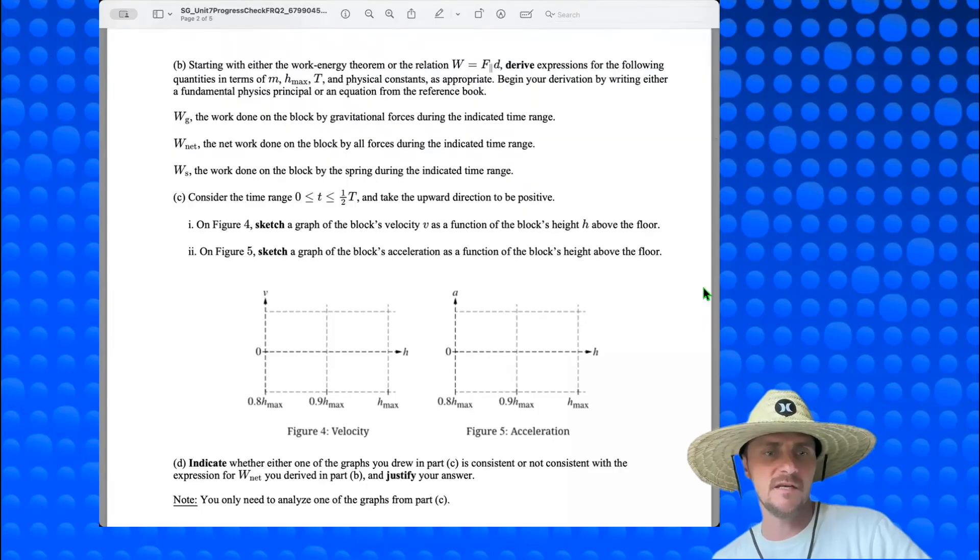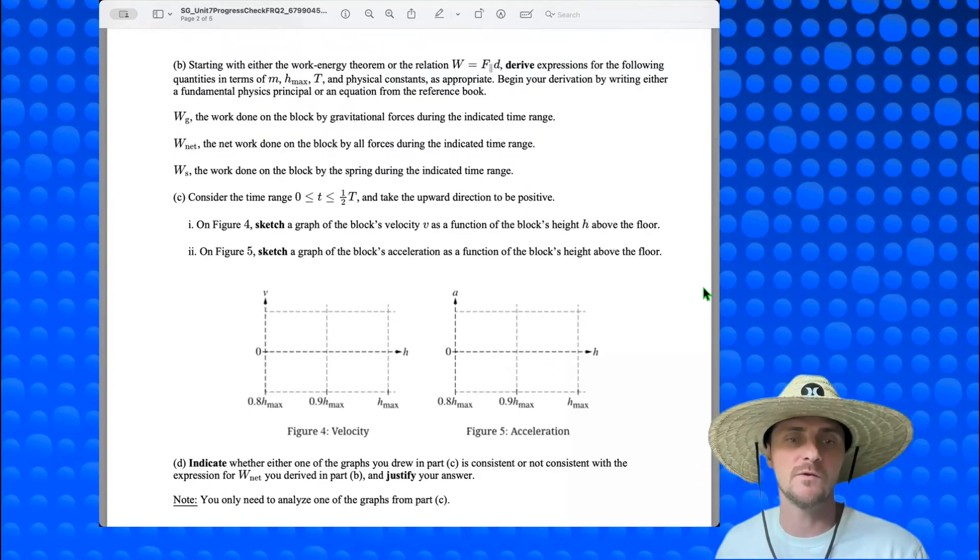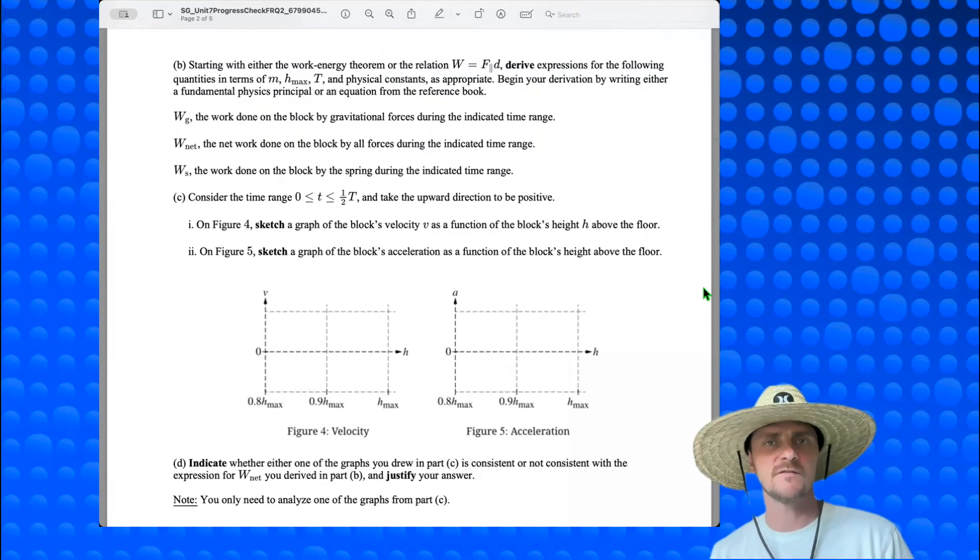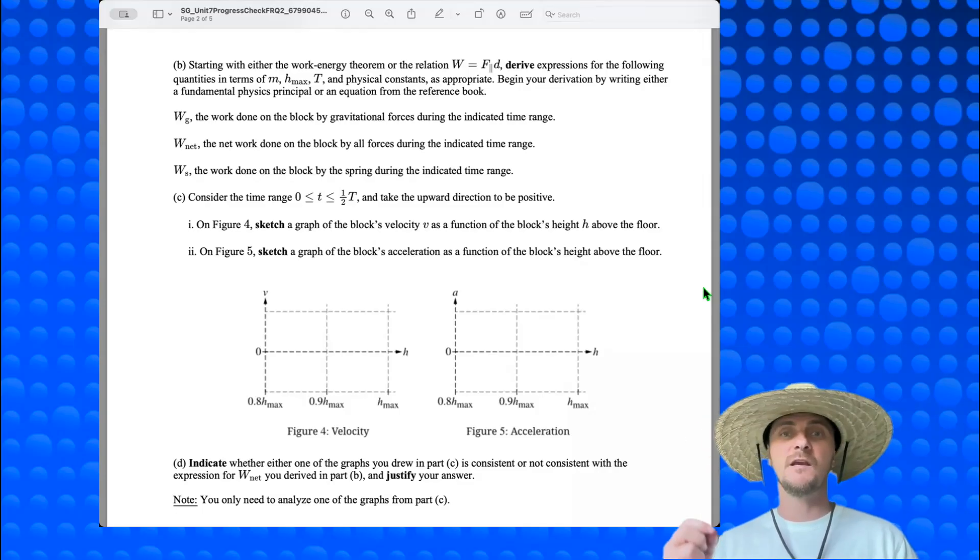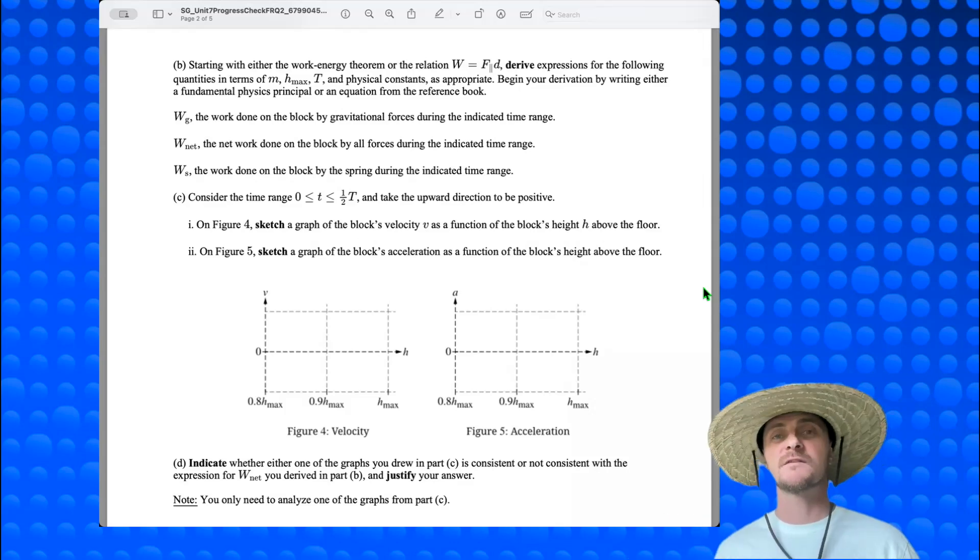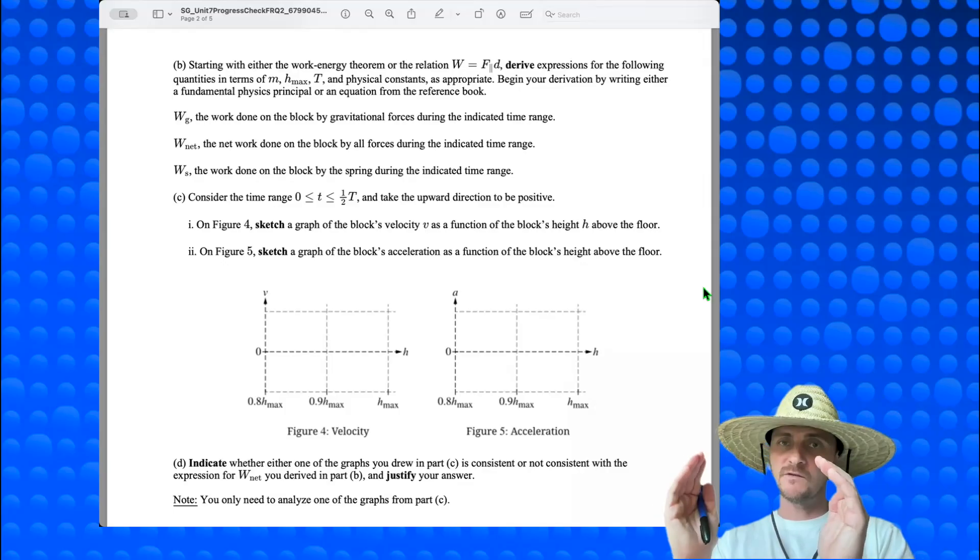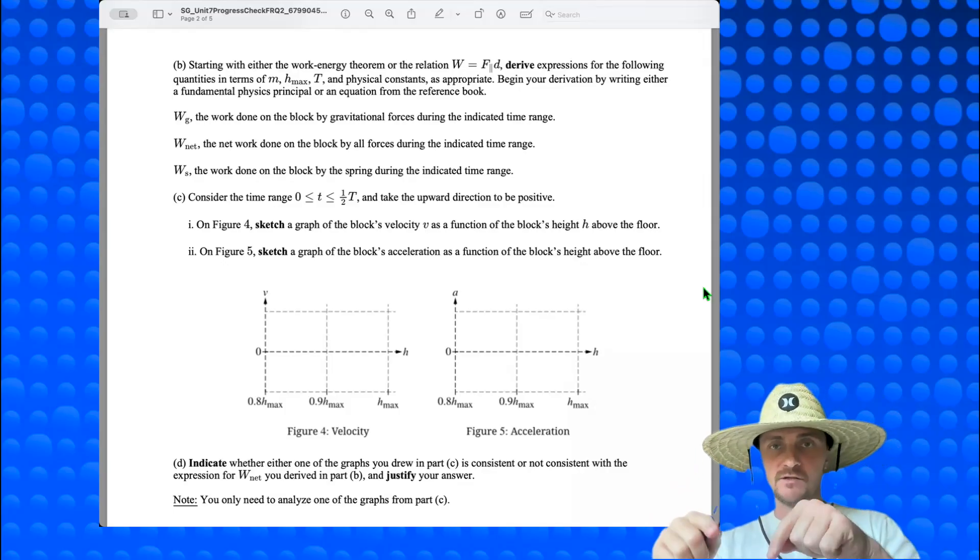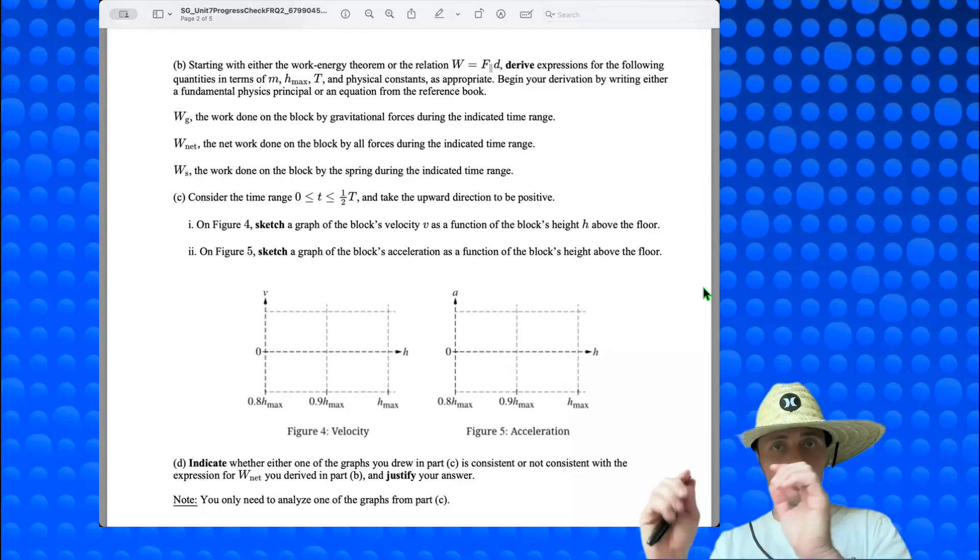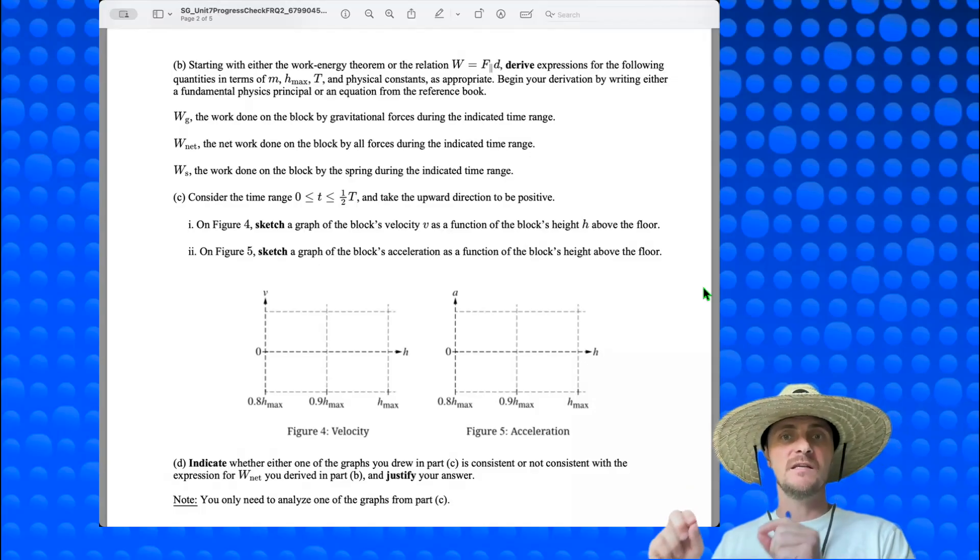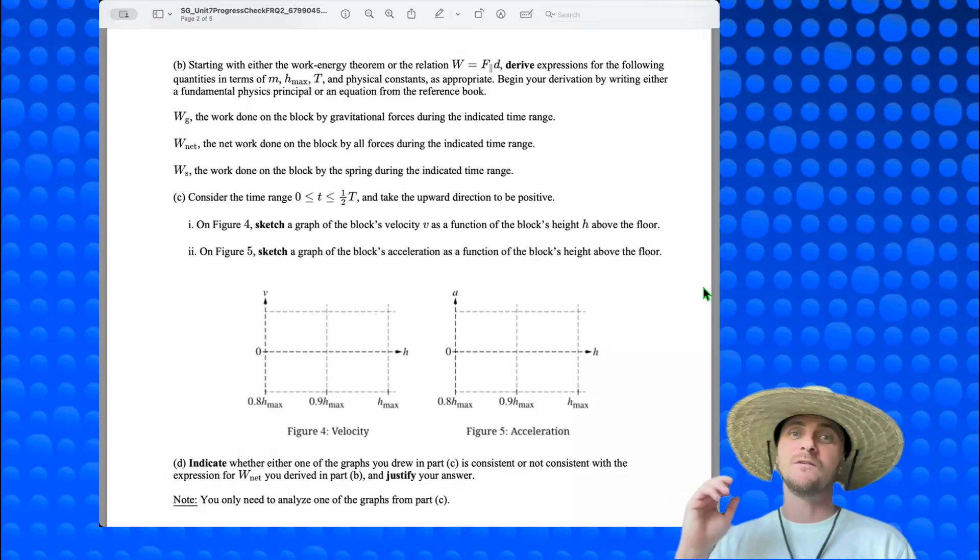And here our prompt says, indicate whether either one of your graphs you drew in part C is consistent or not consistent with the expression for work net you derived in part B and justify your answer. And this is a pretty easy justification, so I'm just going to verbalize it to you. Here we go. I would say the velocity graph I drew in part C is consistent with the work net expression I derived in part B. From my graph in part C, my beginning velocity and my ending velocity are both zero. Then say, based on the equation I developed in part B, and in parentheses write work net equals KE final minus KE initial, and then show each one of those kinetic energies crossed out to zero. Put that in parentheses. Then you would write, both kinetic energies were zero, which corresponds to the zero velocities indicated in my graph in part C. And that's all you got to write. You're done with that one.